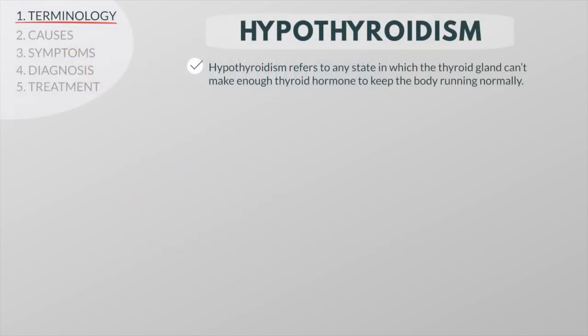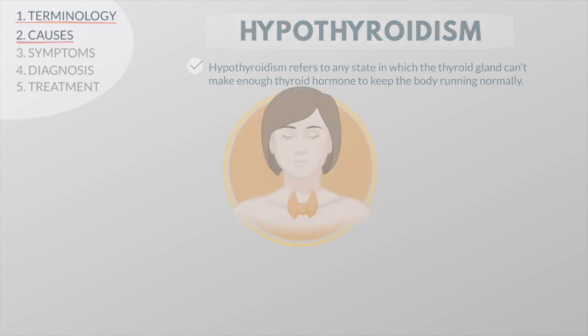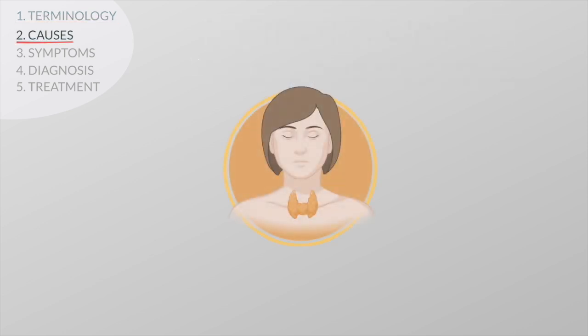Hypothyroidism refers to any state in which the thyroid gland can't make enough thyroid hormone to keep the body running normally. There can be many reasons why the cells in the thyroid gland can't make enough thyroid hormone. Here are the major causes, from the most to the least common.